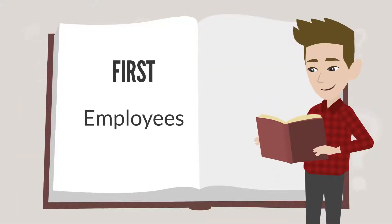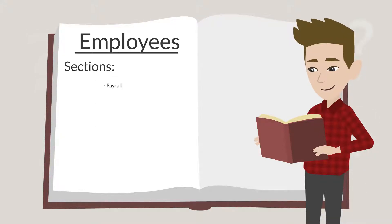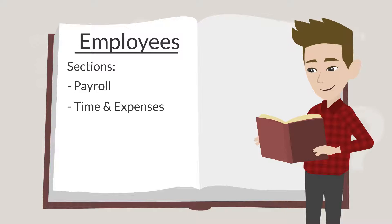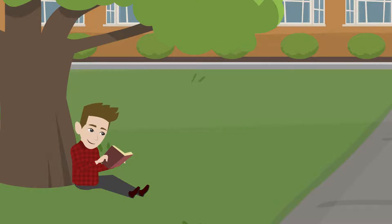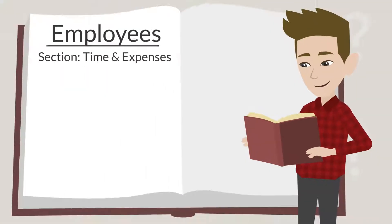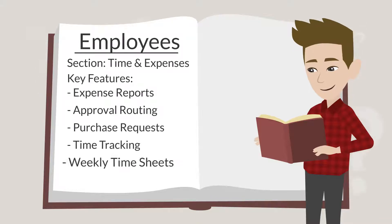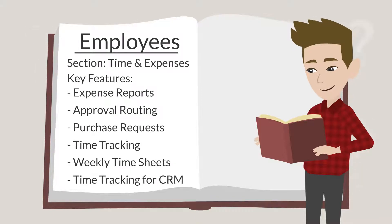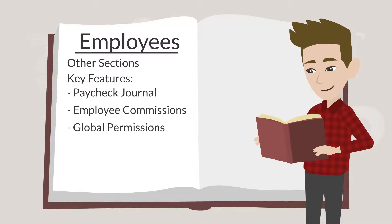First, Employees. This subtab includes a variety of features that help to organize employee information. It is divided into four sections: Payroll, Time and Expenses, Commissions, and Permissions. The largest of these sections is Time and Expenses. Some of the key features in this section are Expense Reports, Approval Routing, Purchase Requests, Time Tracking, Weekly Timesheets, and Time Tracking for CRM. Key features in the other sections include Paycheck Journal, Employee Commissions, and Global Permissions.